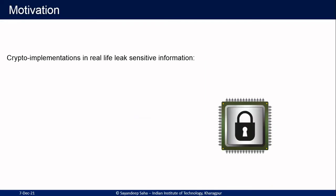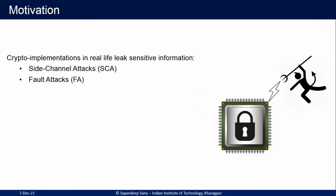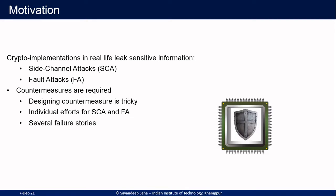Cryptographic implementations in real life leak sensitive information, as is pretty well known. Among several sources of information leakage, side channels are one of the most prominent ones, where the adversary passively observes some physical signals such as electromagnetic radiation or power consumption of the chip, and from there tries to derive the secret. In contrast, a fault attack adversary deliberately perturbs the computation of the chip and from the faulty system responses tries to derive the secret. Countermeasures exist for both of these attacks and have been designed quite orthogonally to date. However, designing countermeasures for both of these attacks is very tricky and there are several failure stories.